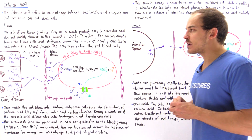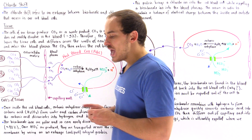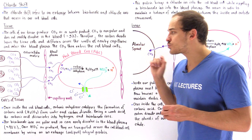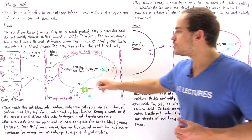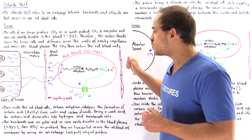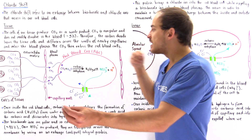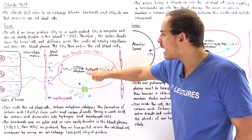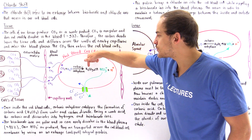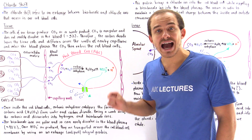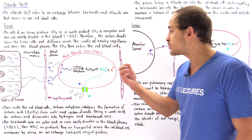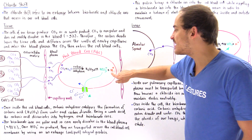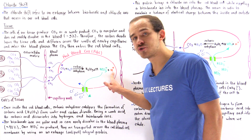Once inside the red blood cells, a catalytic enzyme known as carbonic anhydrase catalyzes the combination of gaseous CO₂ and liquid water to form an acid known as carbonic acid. Carbonic acid (H₂CO₃) is a weak acid, and it dissociates into bicarbonate — the conjugate base — as well as a hydrogen ion.